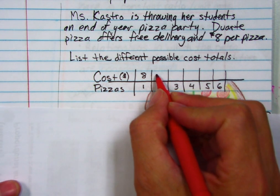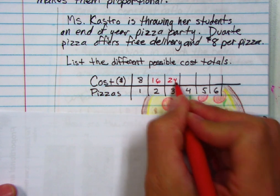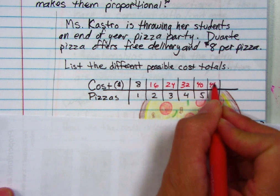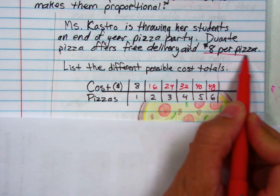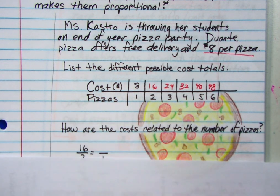Eight dollars for one pizza, that means it's sixteen dollars for two pizzas, twenty-four dollars for three pizzas, thirty-two dollars for four, forty dollars for five, and forty-eight dollars for six. How do I do that? I just multiply. Eight dollars a pizza, and it's free delivery, so there's no extra charges. And so those are my costs.